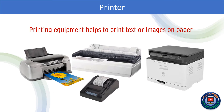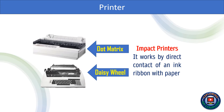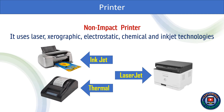Printing equipment helps to print text or images on paper. Impact printers work by direct contact of an ink ribbon with paper. Non-impact printers use laser, xerographic, electrostatic, chemical, and inkjet technologies.